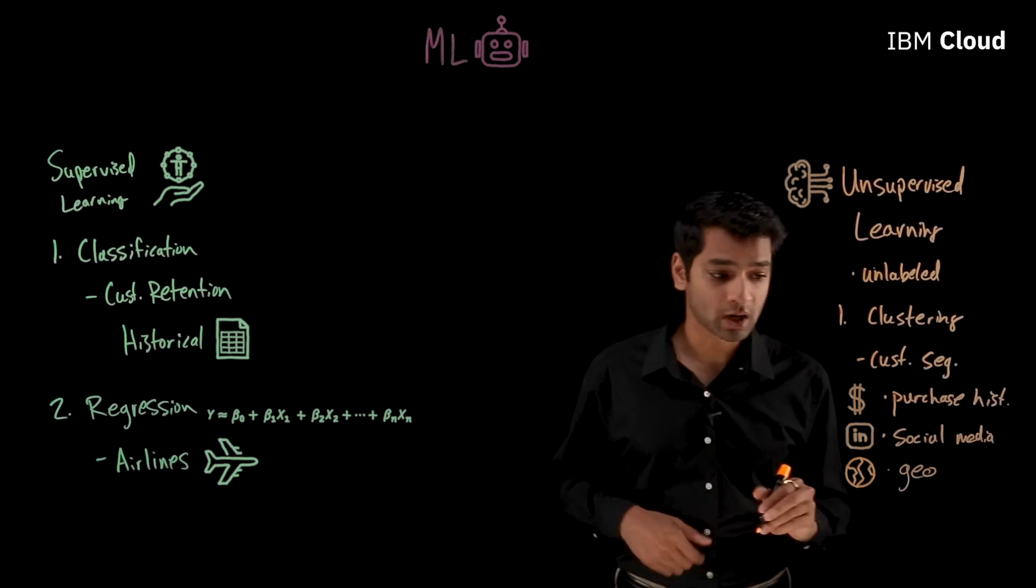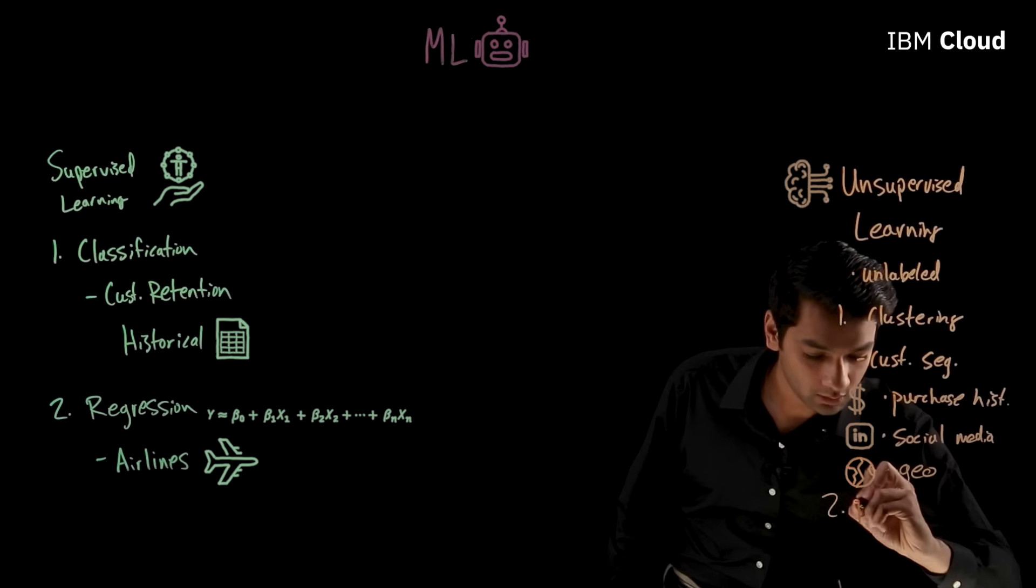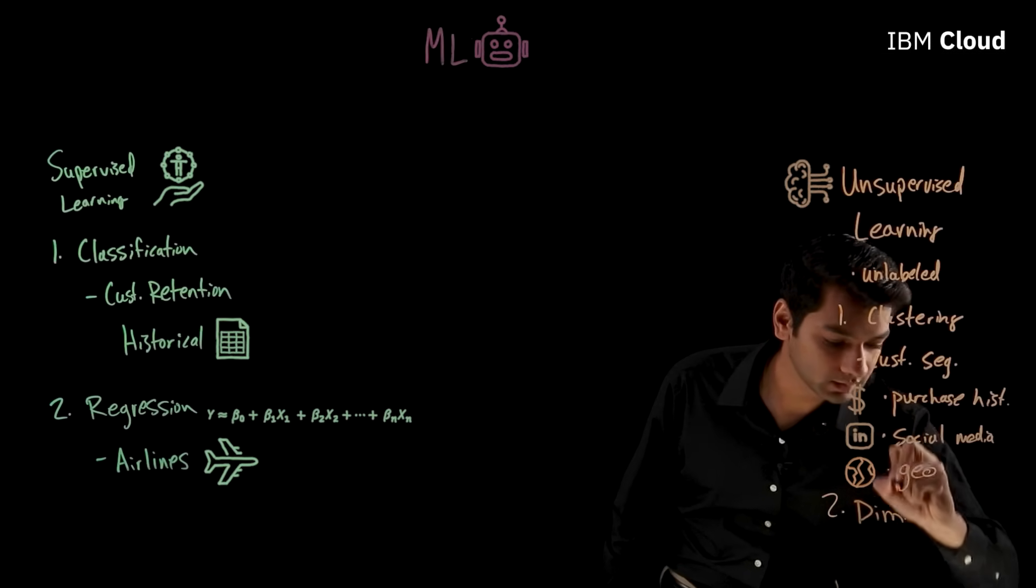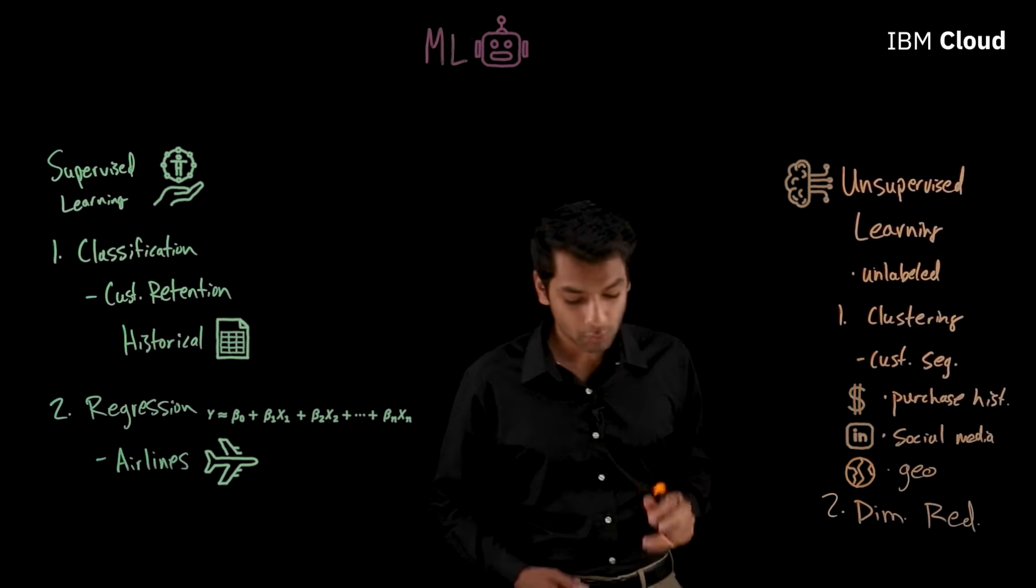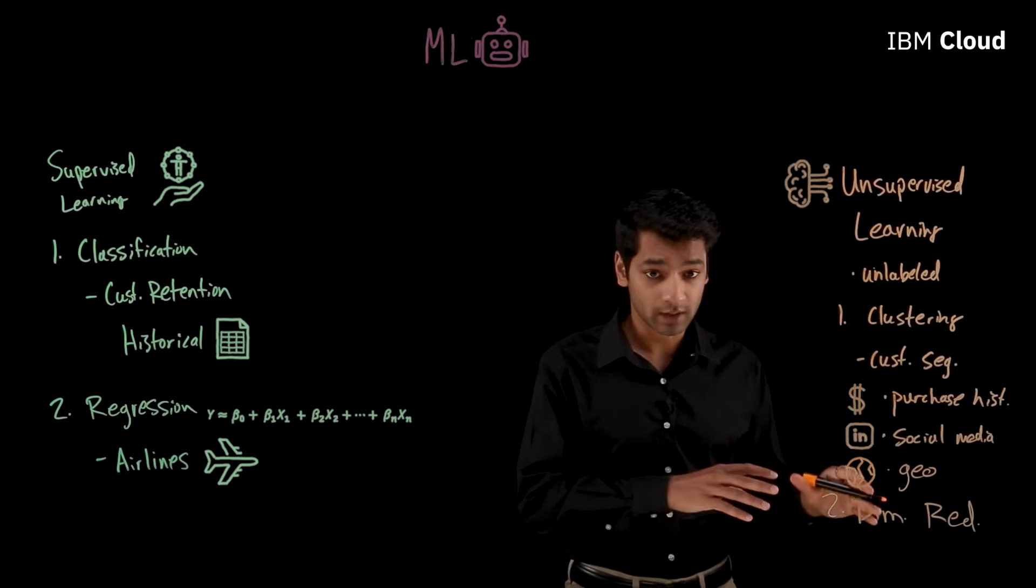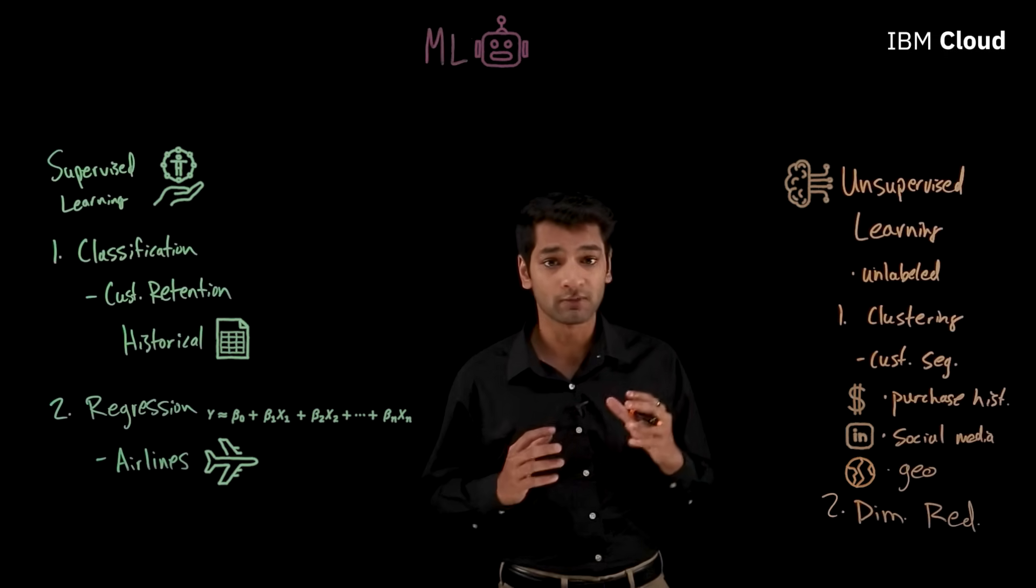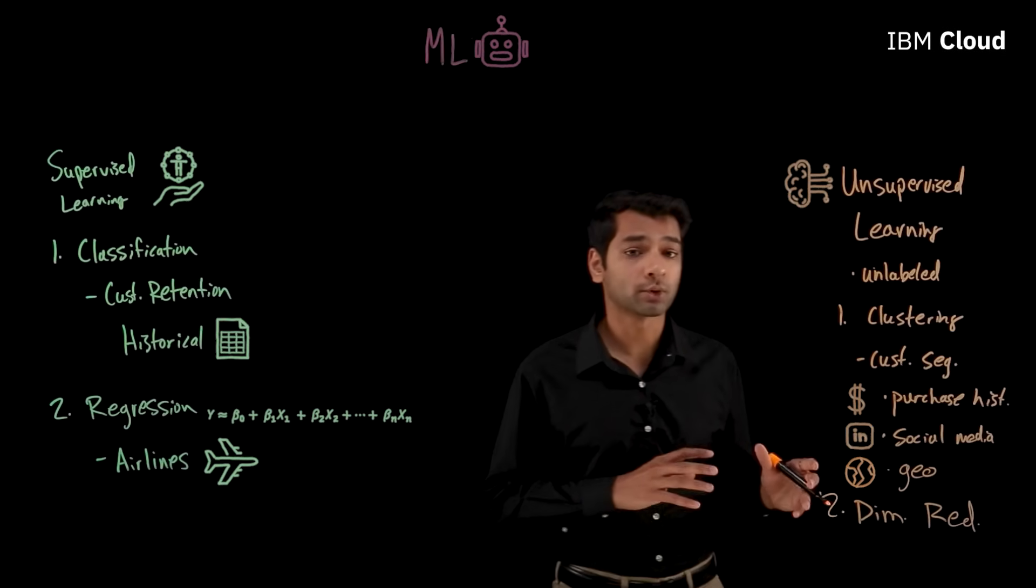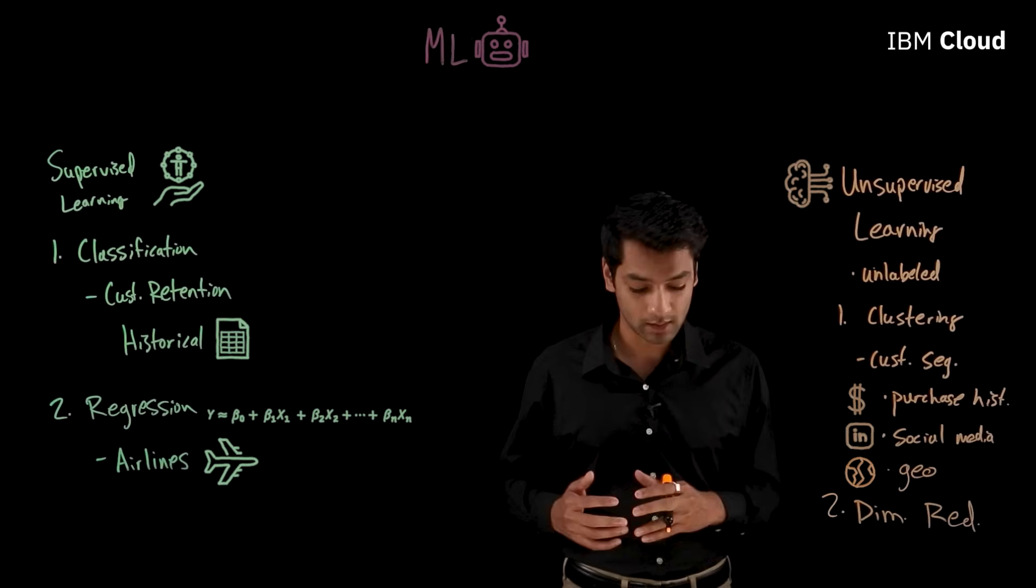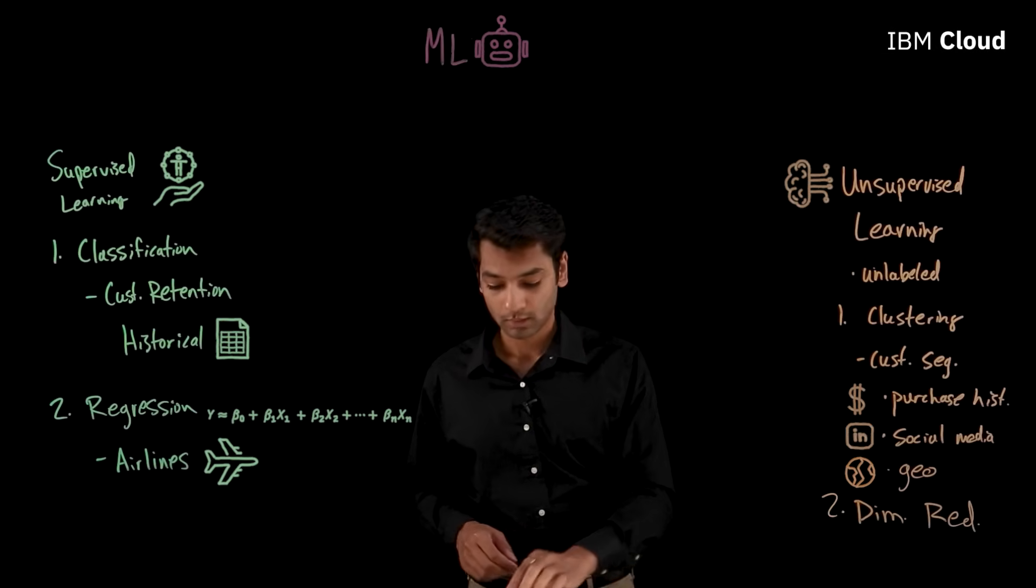And the last point I want to touch on for unsupervised learning is called dimensionality reduction. So we won't discuss this in detail in this video, but this refers to techniques that reduce the number of input variables in a dataset, so we don't let some redundant parameters over-represent the impact on the outcome.